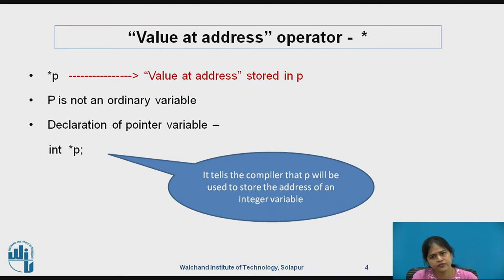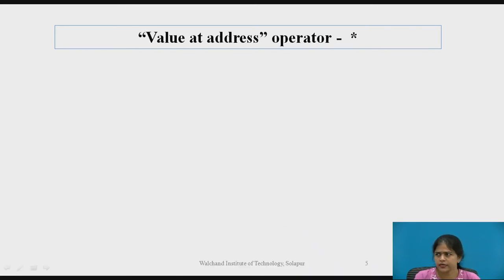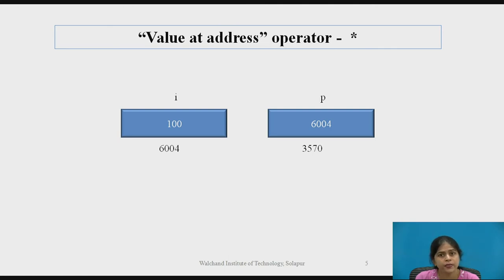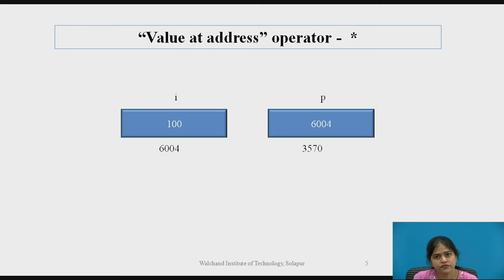To justify this with the value-at-address operator, let me explain the meaning of this declaration again. int *p means p contains some address, say 6004, and the value at this address is an integer value. Value at 6004 is 100, and that integer value has a name — let's say i. So i is the name given to a location which stores 100. So i is an integer variable and p is an integer pointer variable.